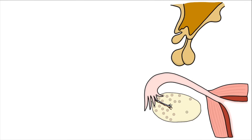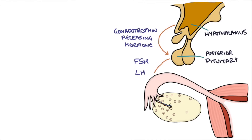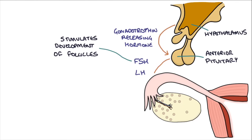So let's start day one of the menstrual cycle. At the very top, the hypothalamus kicks everything off by releasing gonadotrophin-releasing hormone. This hormone does what it says on the tin — it causes the release of gonadotrophins, follicle-stimulating hormone and luteinizing hormone, from the anterior pituitary gland. The main job of FSH is to stimulate the development of the follicles, and the main job of LH is to cause ovulation.